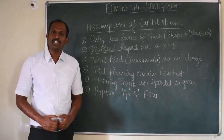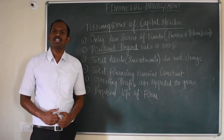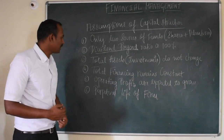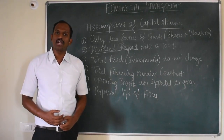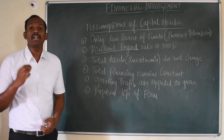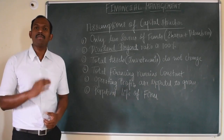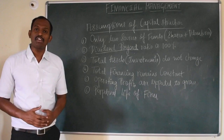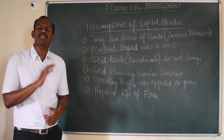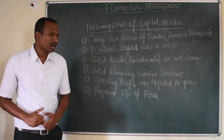The third assumption is that total assets do not change — the company will not make any additions or deletions in its asset structure; neither purchase nor sell. The fourth assumption is that total financing remains constant. The total amount of funds will be constant, but the company can change the proportions — for example, from 50% debt and 50% equity to 60% debt and 40% equity.